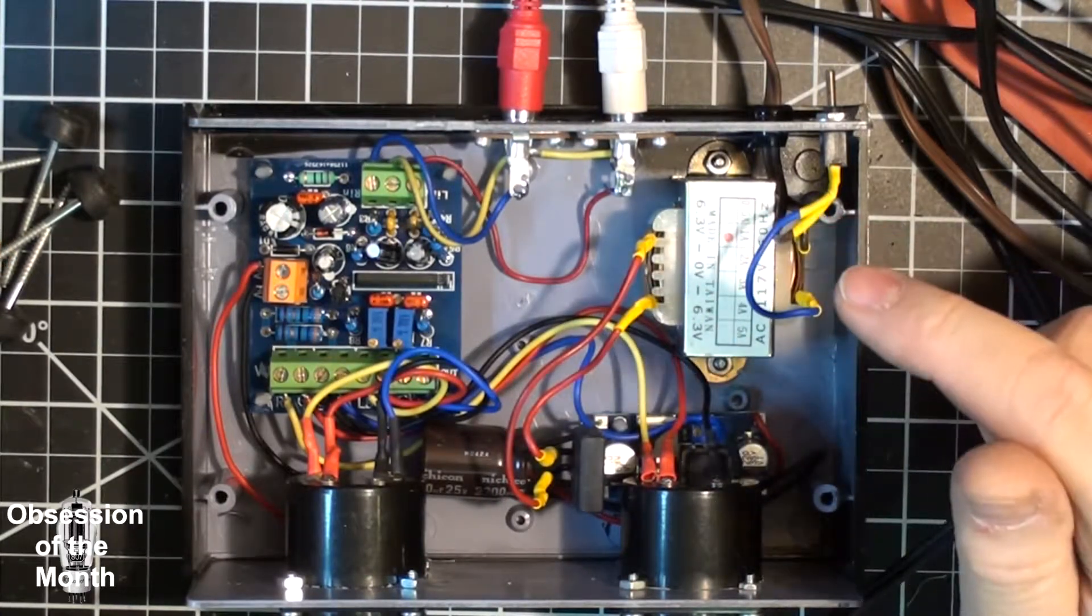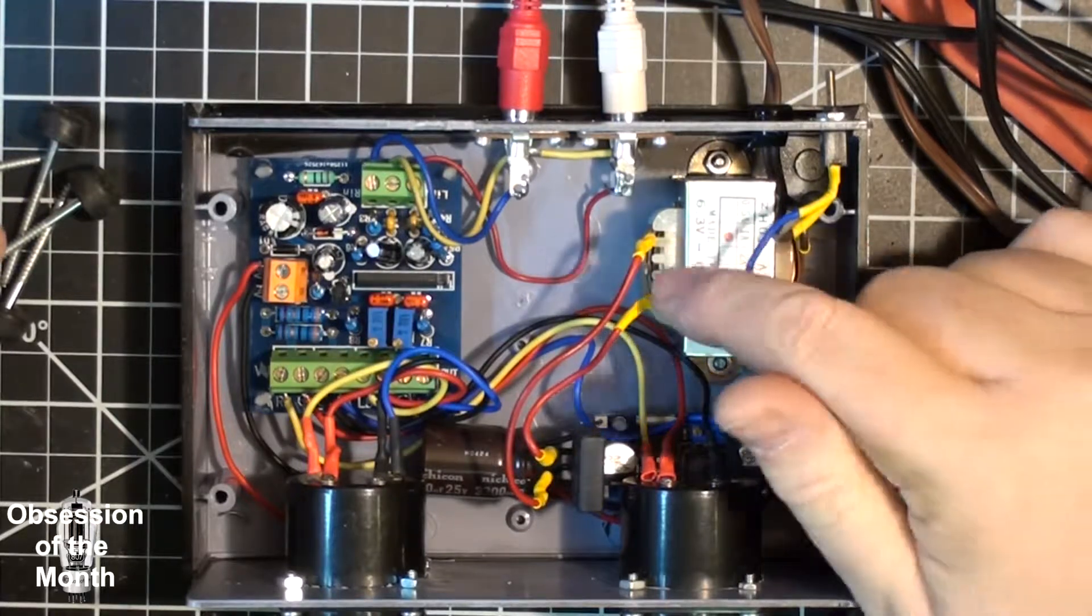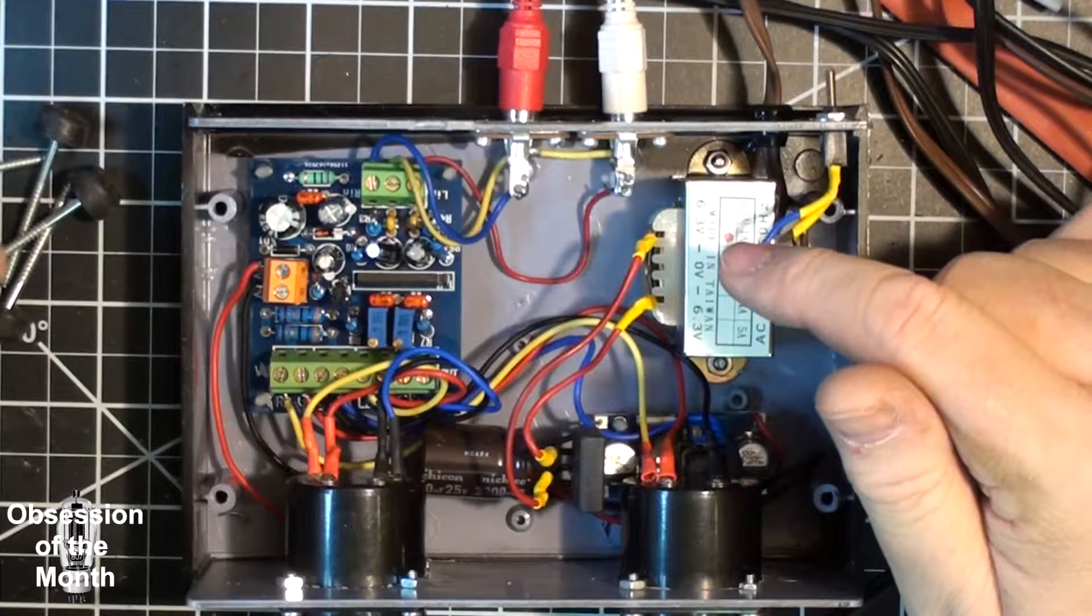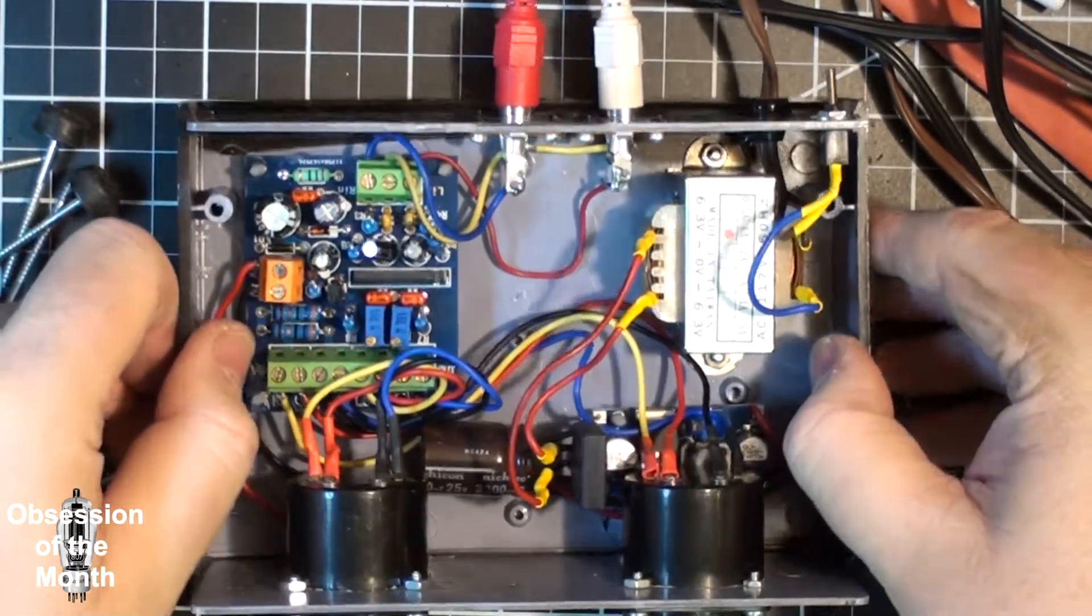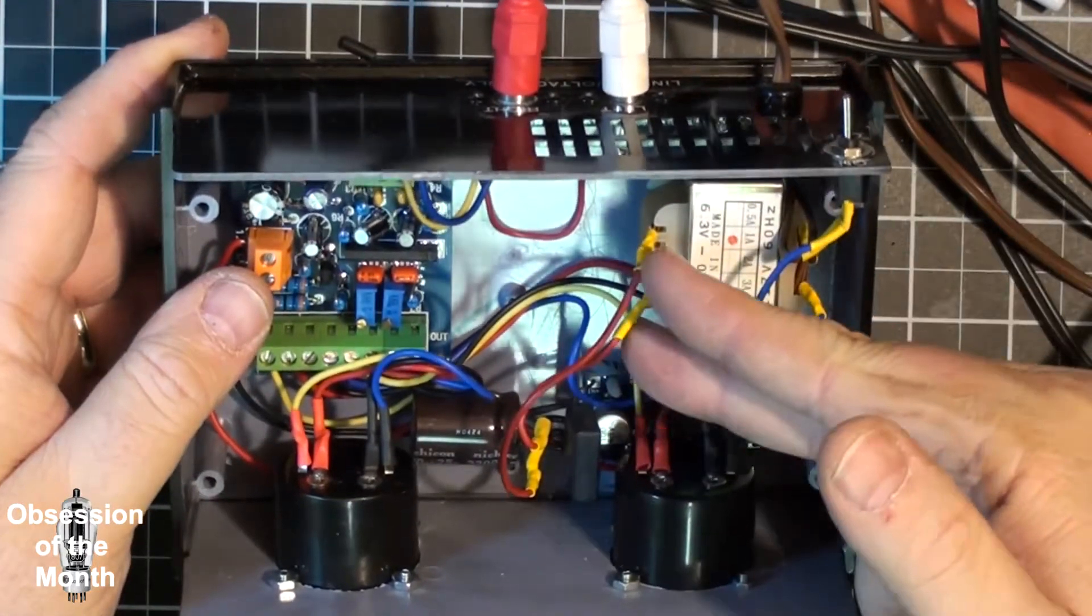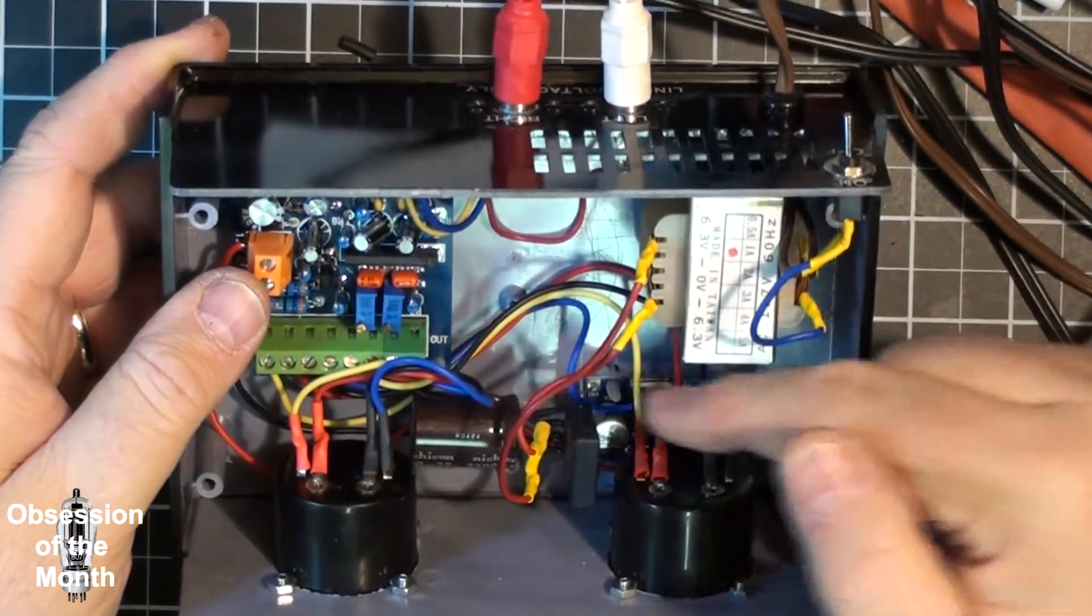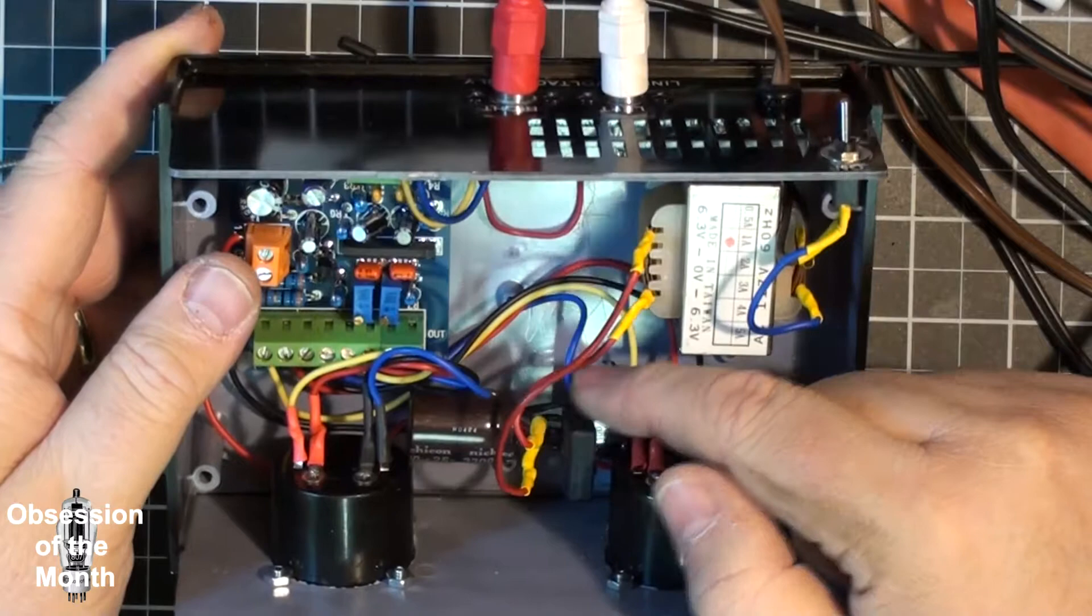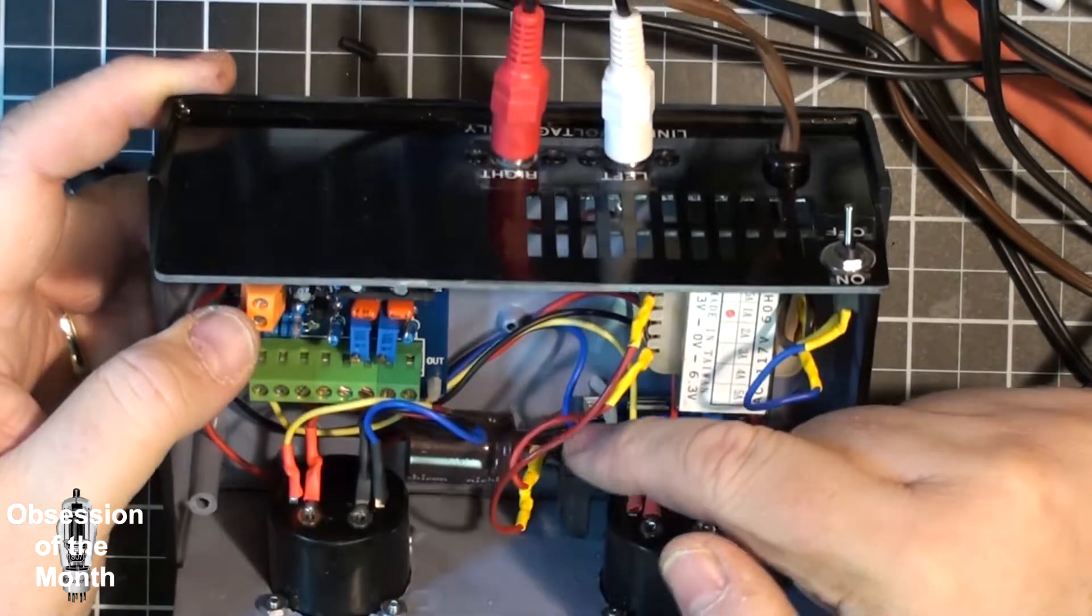When you run that through a bridge rectifier you get about 17 volts. So what I did was I have AC coming in here, I have the AC lower AC voltage coming out that I have going into this bridge rectifier, which is a pull from something.